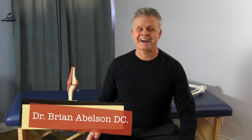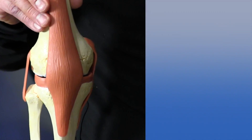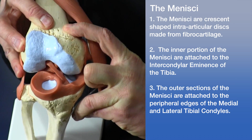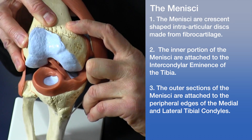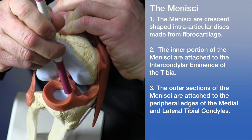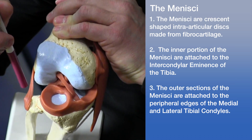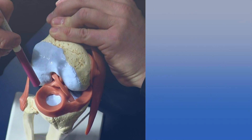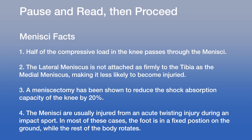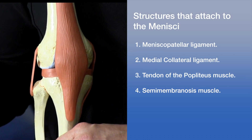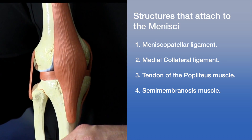The next thing we're going to discuss is the menisci of the knee. The menisci are crescent-shaped, or croissant-shaped, interarticular discs made of fibrocartilage. The tips of the menisci are attached to the intercondylar eminence — the center part of the tibia. The thicker outer margins are attached to the peripheral edges of the medial and lateral tibial condyles. There are also several interesting attachment sites to nearby structures to mention when discussing the meniscus.